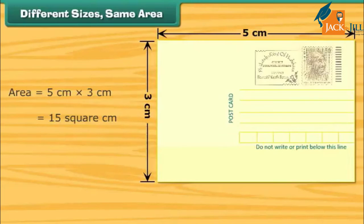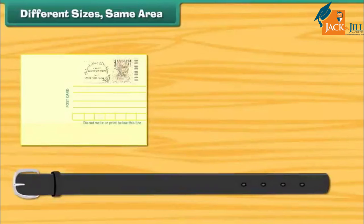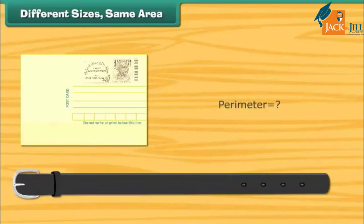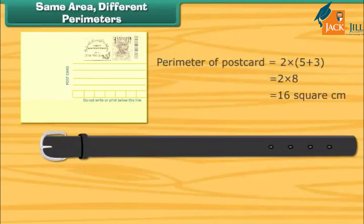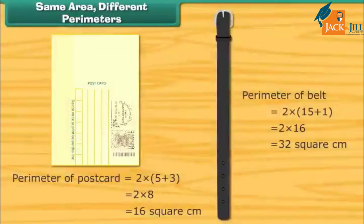Look at this postcard. Its area is equal to 15 square centimeters. The area of this belt is also 15 square centimeters. Both the postcard and belt are of the same area, but their sizes are different. What about their perimeters? The perimeter of the postcard is equal to 16 centimeters, while the perimeter of the belt is 32 centimeters. Thus, things with the same area can take different forms, and the perimeter of such things can be same or different.